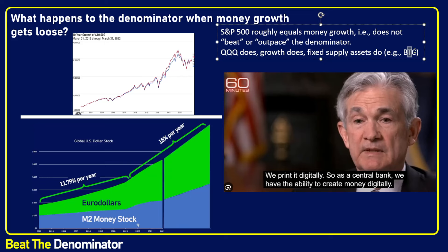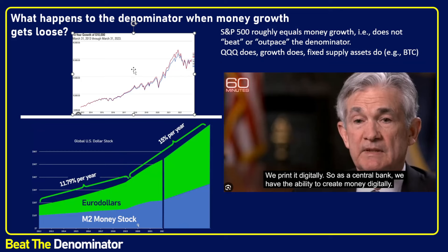Assets with truly fixed supply also outpace it — like art, like Bitcoin. These have truly fixed supply. If you take Bitcoin, you have 21 million divided by an ever-growing pile of US dollars. If you divide all Bitcoin by all US dollars in circulation, in US dollar terms the price of Bitcoin increases, because the numerator is not changing — it's something tangible — while it is divided by the dollar, which is growing ever more exponentially as we are about to do.